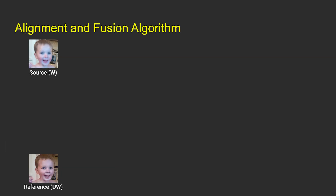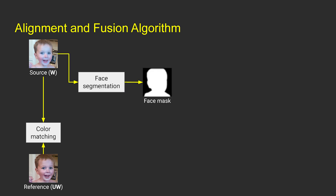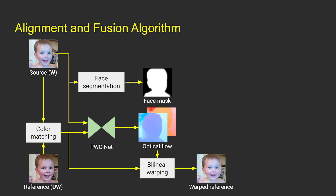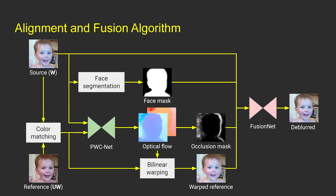We consider the blurry face cropped from the wide camera as the source image, and the sharp but noisy face from the ultra-wide camera as the reference. We first match the color of the reference to the source by adjusting the gains and color conversion matrix. Then we generate a face mask using subject segmentation, and use PWC-Net to compute the optical flows between source and reference images. We use the optical flow to warp the reference image and estimate an occlusion mask. Our fusion net then takes the source image, warped reference image, face mask, and occlusion mask as inputs to generate a de-blurred face.